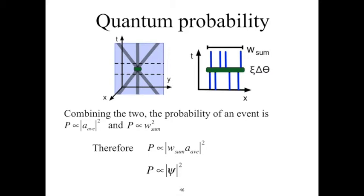We've demonstrated two contributions to the probability: the average amplitude and the sum of the branch weights. The average amplitude is determined by the knot geometry and is equal to the magnitude of the knot's extension into dimensions x4 and x5. The sum of the branch weights is approximately proportional to the number of branches on which we find the knots. Therefore the probability of finding a knot at a particular location is determined by how many knots there are at that location and how big they are. The total probability is the product of the two: the magnitude of (w times a_average) squared. Recalling our definition of ψ equal to w times a_average, we therefore have the probability proportional to |ψ|². In this way we have a geometric derivation of an assumption that is fundamental to quantum mechanics.